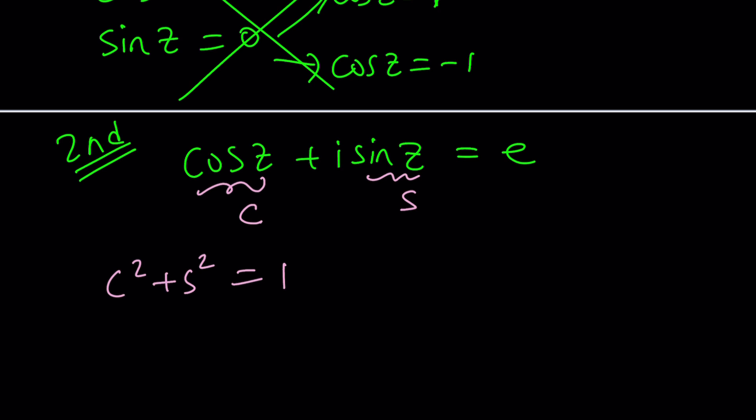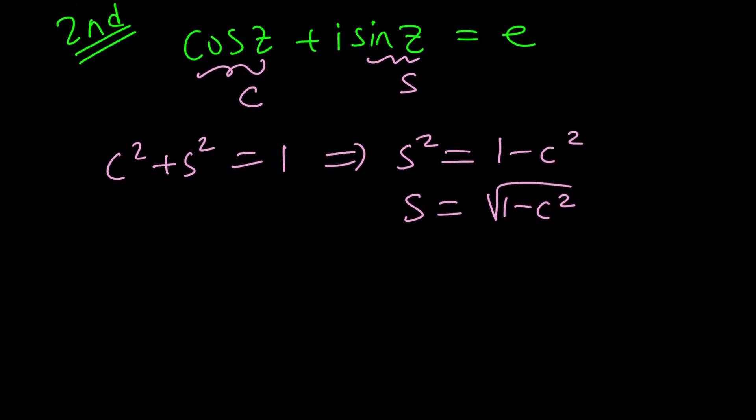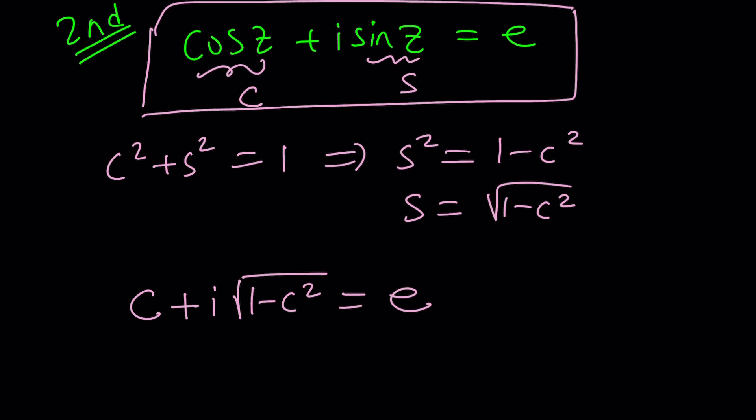If cosine z is c then sine z, which is s, can be written as s equals plus or minus square root of 1 minus c squared. I'm just going to use the plus sign and see what happens. So now we can write this equation in terms of c. I'm going to replace cosine z with c and sine z with square root of one minus c squared and just treat it as a radical equation.